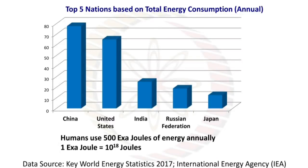Looking at the top 5 nations based on total energy consumption: China is at the top, the United States is second, and India is third. Humans use 500 exajoules of energy annually, where 1 exajoule equals 10 to the power of 18 joules.